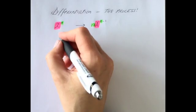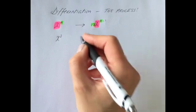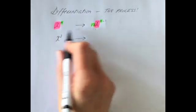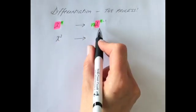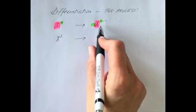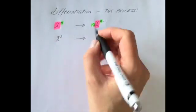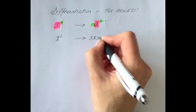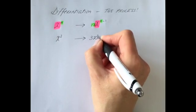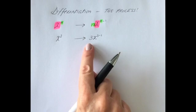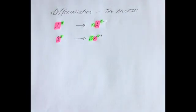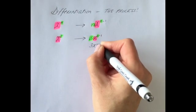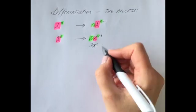Let's say you had x cubed. If we were to differentiate x cubed, following our process from page 25 of the log tables, we bring down the power — 3 — we keep our x, and then we do 3 take away 1. And so that simplifies to 3x squared. And that is the answer.